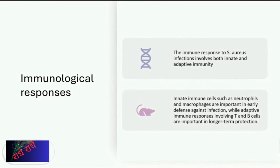Neutrophils and macrophages are part of the body's innate immune response to Staphylococcus aureus, which is a pathogen that can cause a variety of infections, some of them severe. Adaptive immunity, on the other hand, is provided by T and B cells and is necessary for long-term protection.